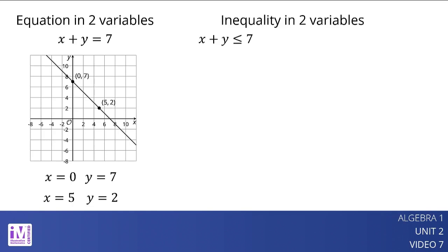The inequality x plus y is less than or equal to 7 is an inequality in two variables. Its solution is any pair of x and y whose sum is 7 or less than 7. This means it includes all the pairs that are solutions to the equation x plus y equals 7, but also many other pairs of x and y that add up to a value less than 7.